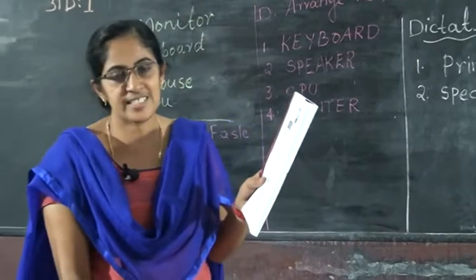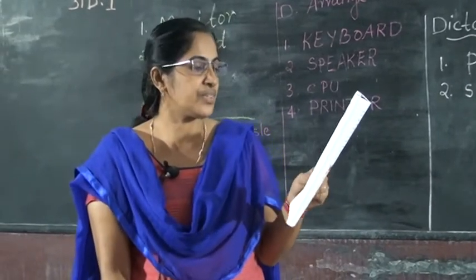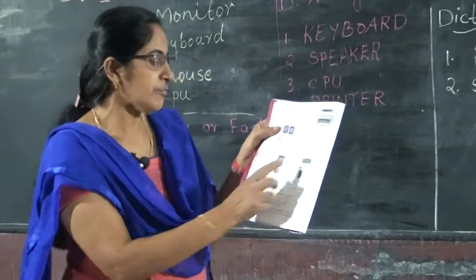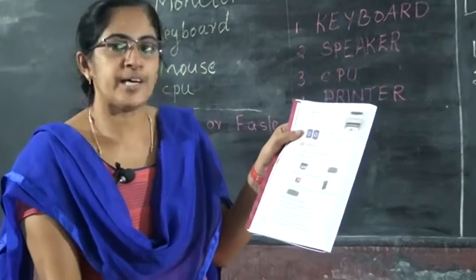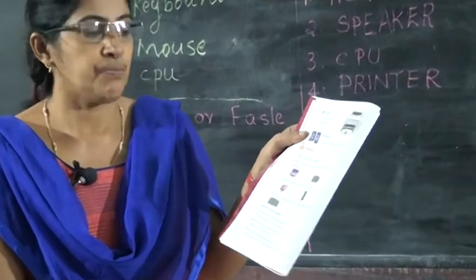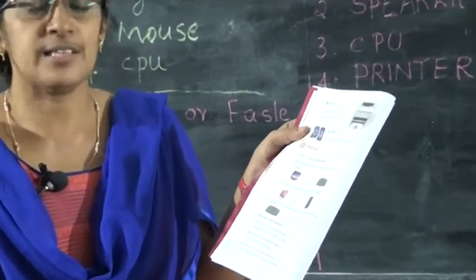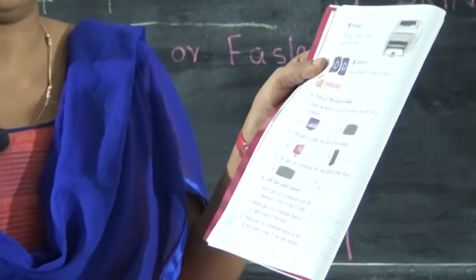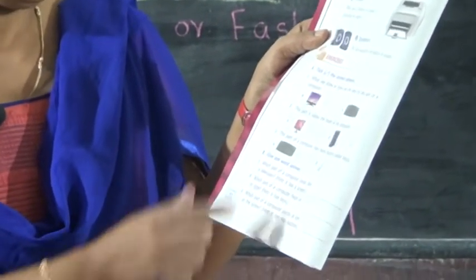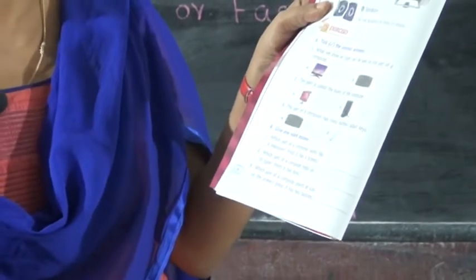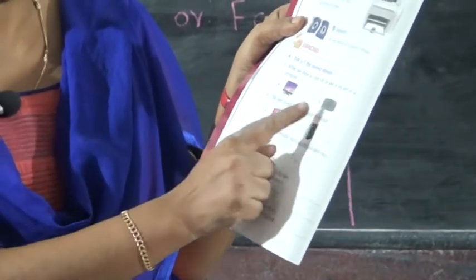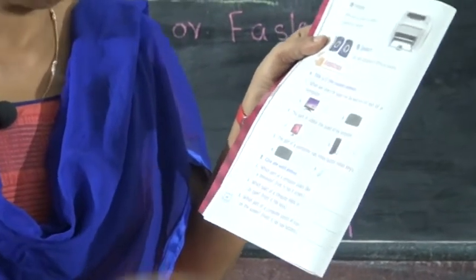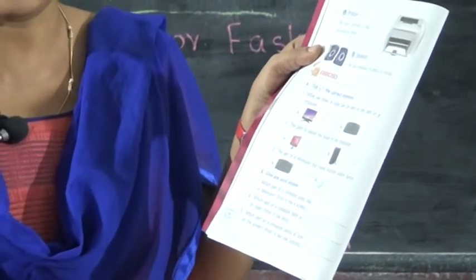Exercise one, take the correct answers. First question: what we draw or type can be seen on this part of a computer? Two answers are given: monitor and keyboard. What is the answer? Monitor. Monitor is the correct answer.